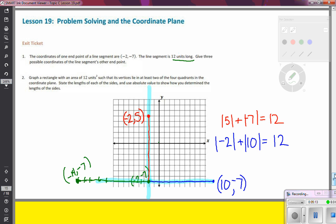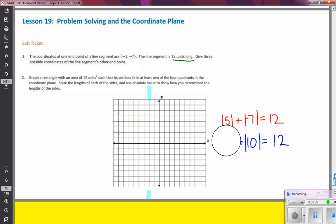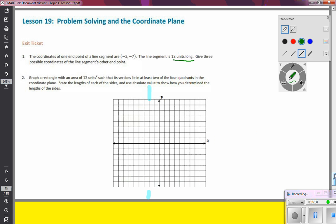So the next part of this is we're going to now graph a rectangle with an area of 12 square units so that the vertices lie in at least two of the four quadrants on the coordinate plane. We'll have to state the lengths of the sides and use absolute value to show how we determine the lengths of the sides. So I'm going to go ahead and just erase what I've got done here from number 1. So I can reuse this, and I know if I'm going to have an area of 12, area equals base times height or length times width. I know that to get 12, I have a couple options. I have 1 times 12, I could do 2 times 6, or I could do 3 times 4.